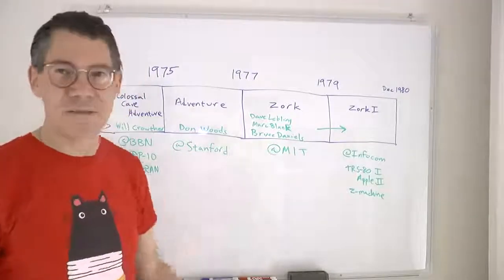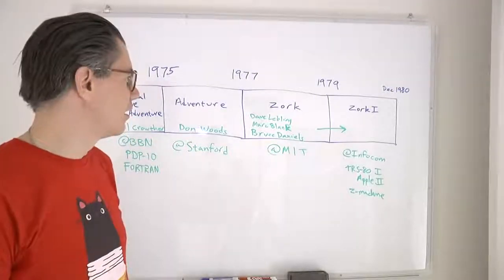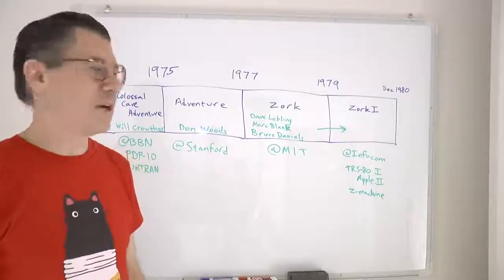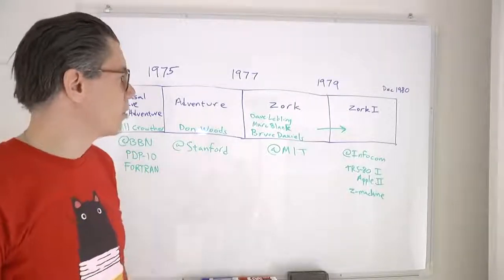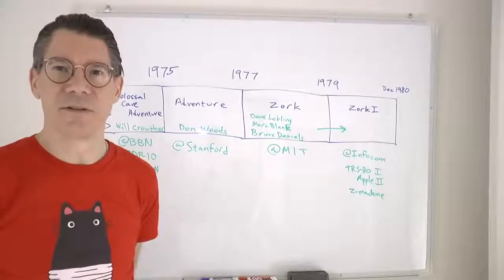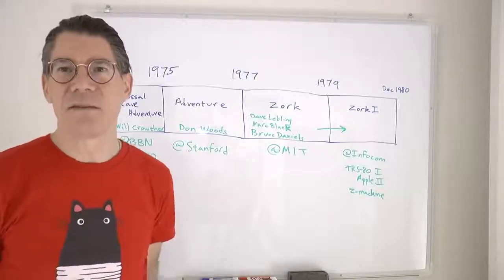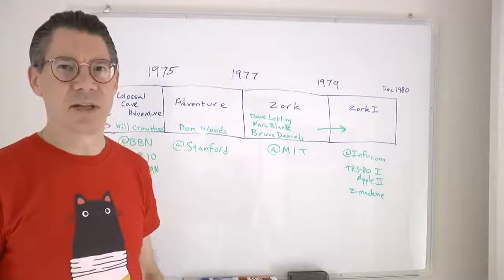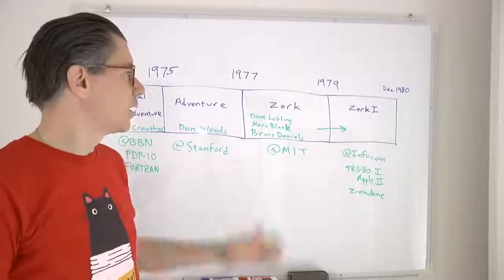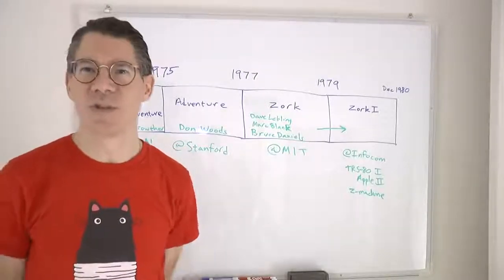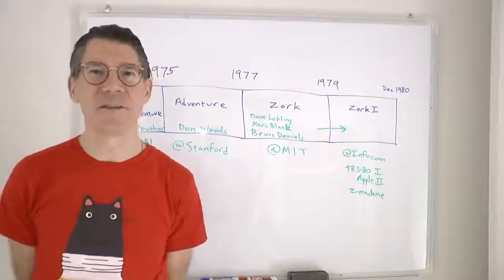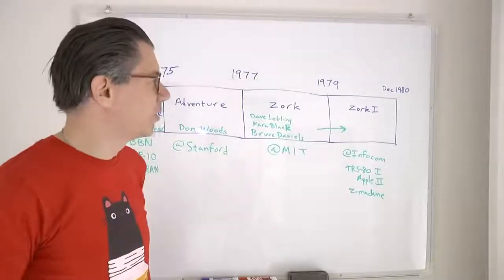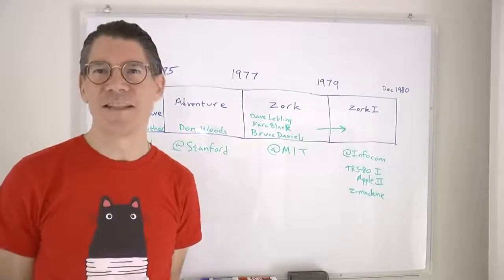So it went from Stanford to MIT, where at least three students — Dave Lebling, Mark Blank, and Bruce Daniels — got hold of it, and they rapidly and vastly expanded it into a huge adventure game. They called it Zork. At the time, Zork was MIT slang for something unfinished, because it was never finished. They worked on it for about two years through to 1979.